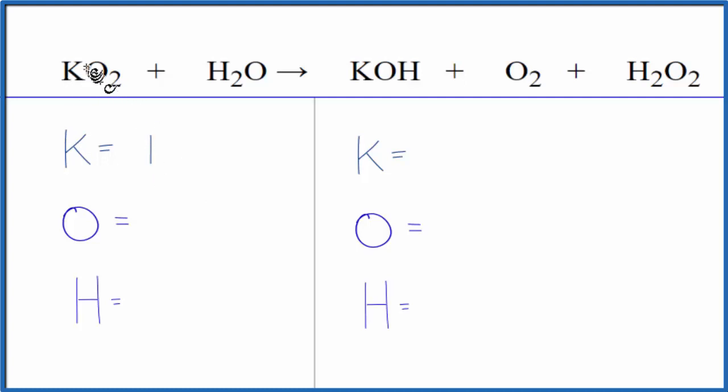We have one potassium, two oxygens, plus don't forget the one oxygen here, we have three. Then hydrogens, we have two. On the product side, one potassium, and then oxygen we have one plus two plus two, that gives us five. Hydrogens we have one plus two, that gives us three.